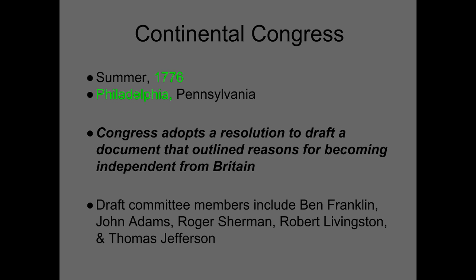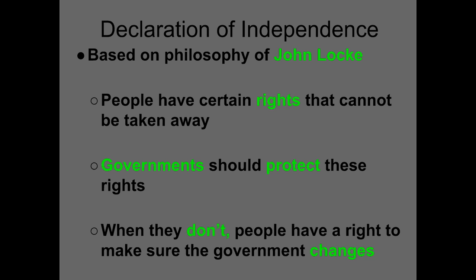By the summer of 1776 in Philadelphia, Congress adopts a resolution to draft a document that outlines the reasons for becoming independent. They come up with a committee including Ben Franklin and Thomas Jefferson to write this document — this is going to be known as the Declaration of Independence. It was based on Enlightenment thinkers like John Locke and his idea that you have natural rights that can't be taken away, and that government should protect these rights — and when it doesn't, people have the right to make sure that government changes.